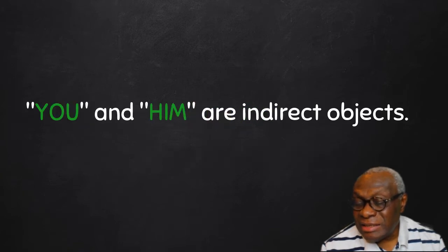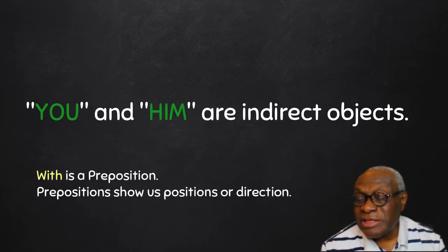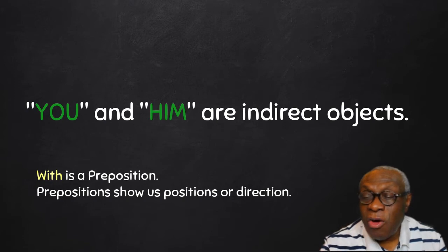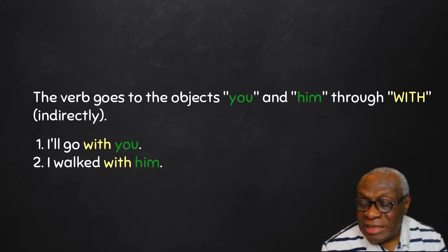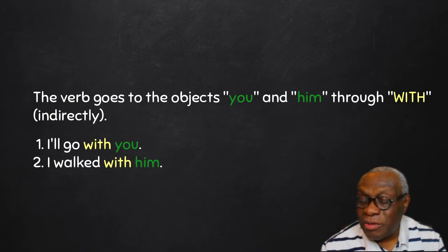I will say these are indirect objects because of the word with. With is a preposition. Prepositions show us positions or direction. With is a preposition, and the verb go goes through with before reaching you. The verb walked will go through with before reaching him.